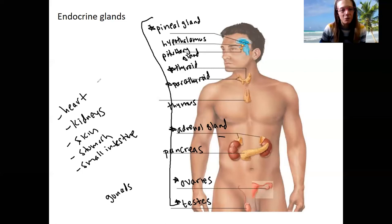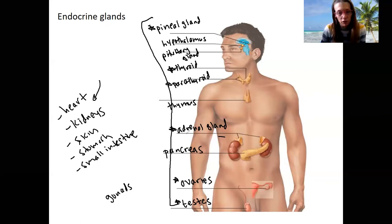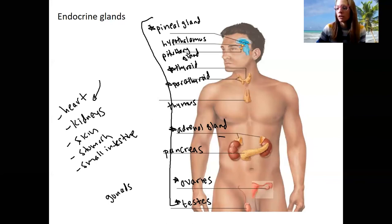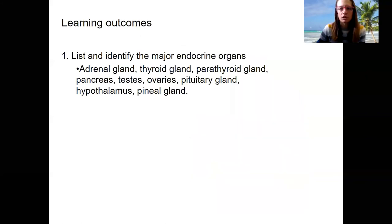We'll also see how the heart is affected by adrenal gland hormones — there's a lot of integration. So what we've done here is list and identify the major endocrine organs, which are the ones I have listed for you.